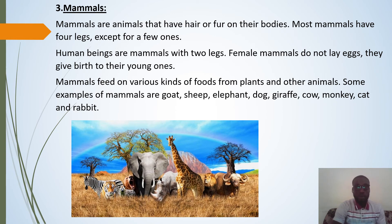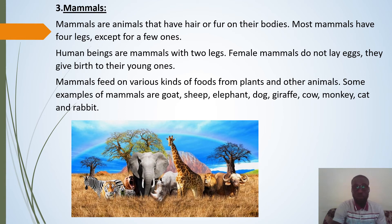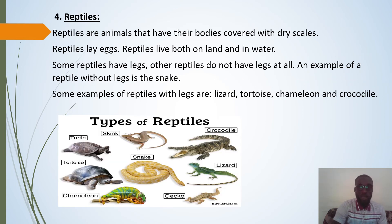The next category is mammals. Mammals are animals that have hair or fur on their bodies. Most mammals have four legs, except for a few — human beings are mammals with two legs. Female mammals do not lay eggs; instead they give birth. Mammals feed on various kinds of foods from plants and other animals. Some examples of mammals are goats, sheep, elephant, dog, giraffe, cow, monkey, cats, and rabbits.